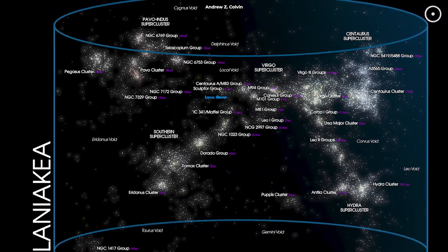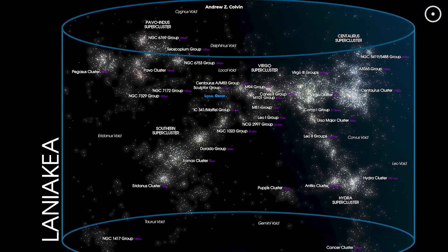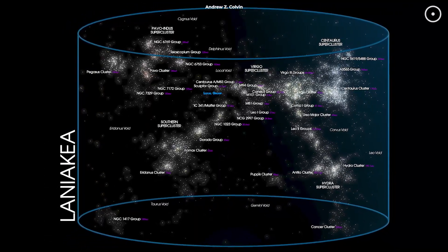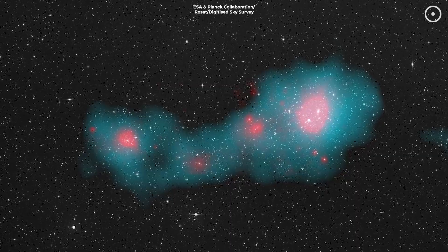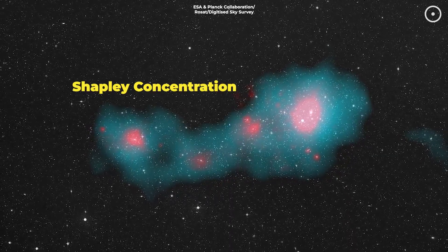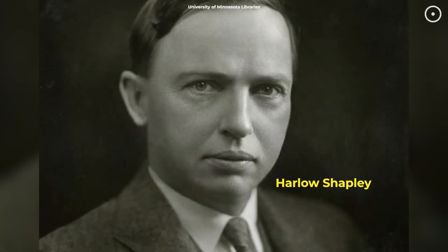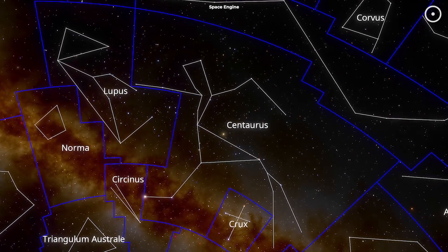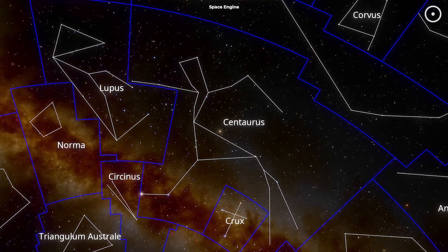New research has unveiled that our Milky Way galaxy, along with its 100,000 galactic neighbors in the Laniakea supercluster, might be part of an even more colossal structure, known as the Shapley Concentration. Back in the 1930s, an astronomer named Harlow Shapley noticed something odd. A region of space that appeared to be a large cloud in the constellation Centaurus.